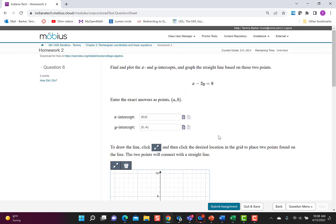The next question I wanted to show you is how to draw a line using points. So this question says find and plot the x and y intercepts and graph the straight line based on these points.